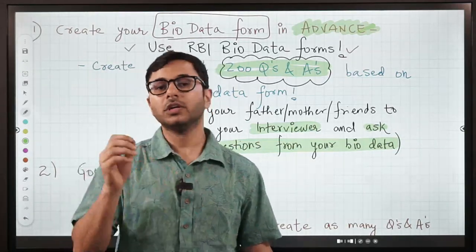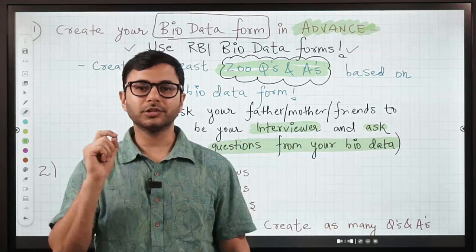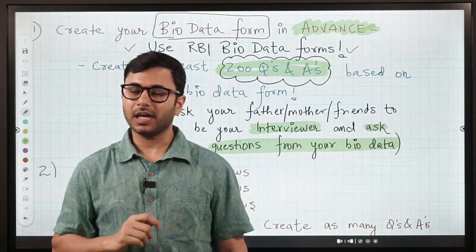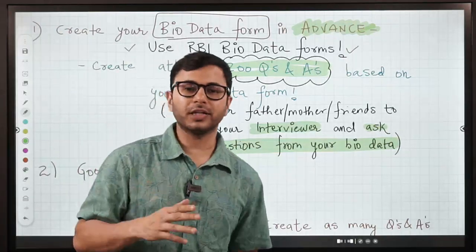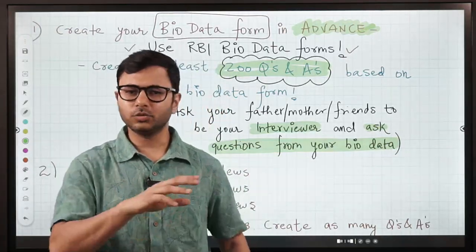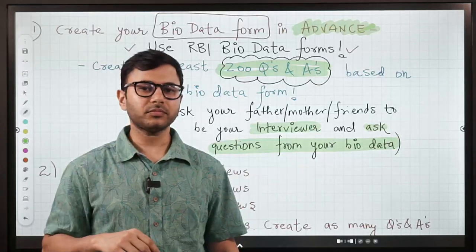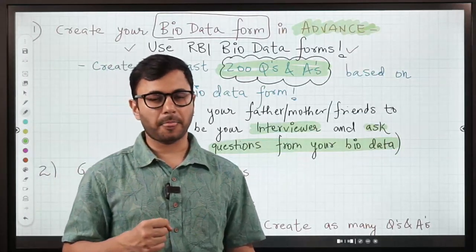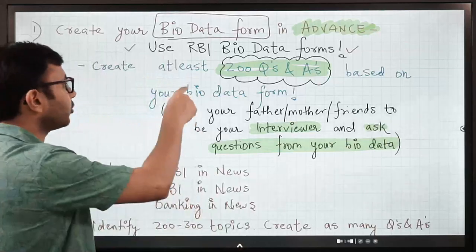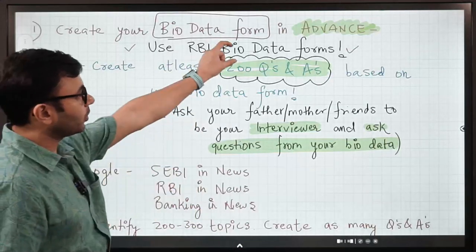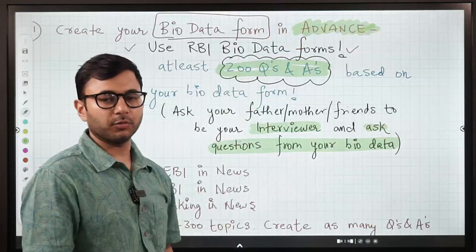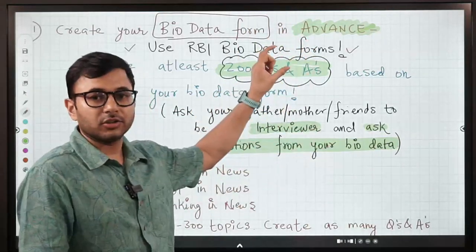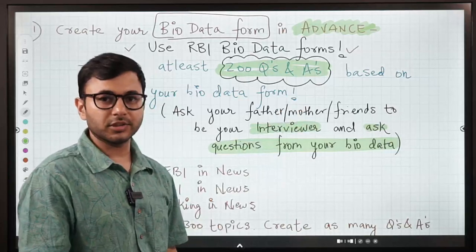They are also humans, they also don't want to throw you off continuously and see how you react. They'll do that in one or two questions, but in the expected questions they want you to excel. And that is possible only when you do this exercise: not only the first part where you create your own bio data form in advance, but the entire exercise creating two to three hundred questions at least.